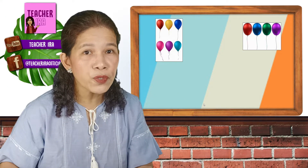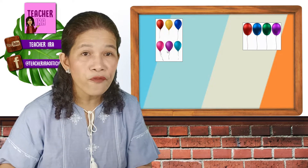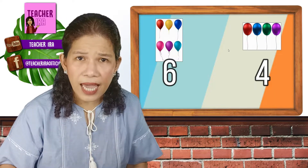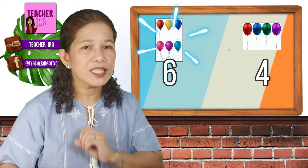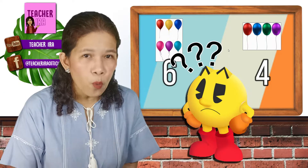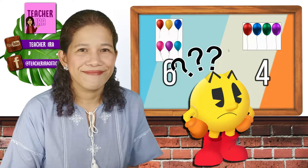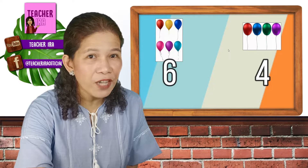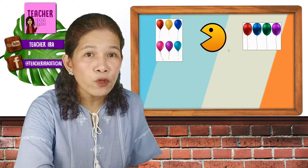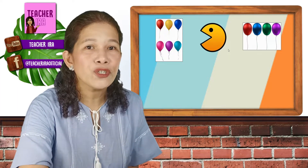Let me have an example. I have here two sets of balloons. On the first set, we have 1, 2, 3, 4, 5, 6 balloons, and on the other set, we have 4 balloons. Now, which set has more? Yes, the set with 6. What do you think will Pac-Man eat? The one with 6 or the one with 4? Remember, he loves more. You are correct. Pac-Man will eat the set with more. That's why you have to open his mouth.